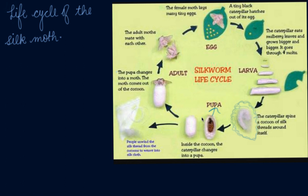A few weeks later, the cocoon opens and an adult moth comes out. The cocoon opens from the top and the adult silk moth comes out. The cocoon — this fiber-like structure woven around the pupa — is the main source of silk fiber.